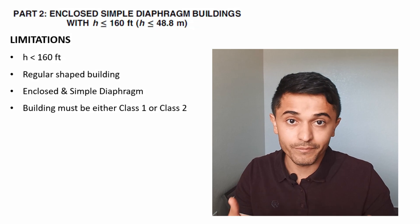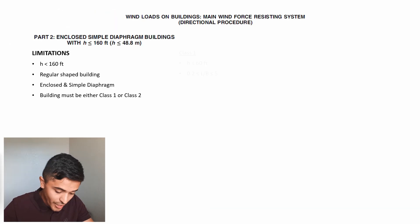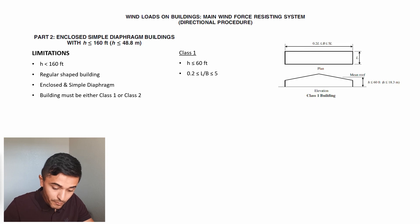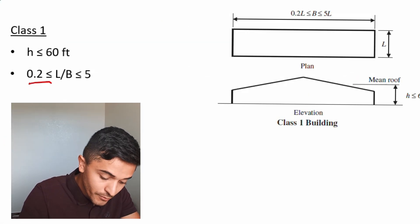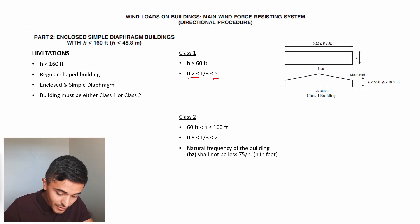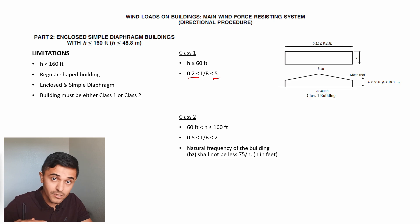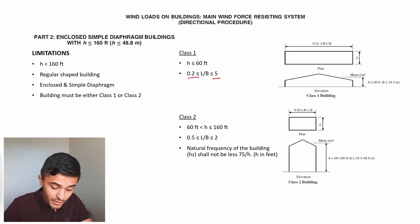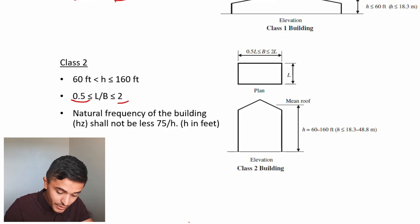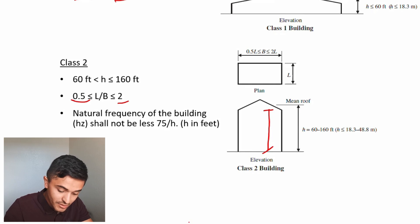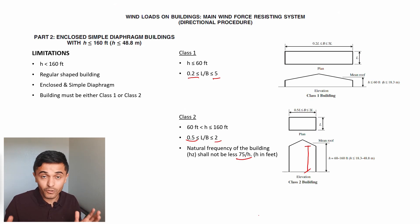The building must also be either class 1 or class 2 — another definition introduced in this chapter. For a class 1 building, the height is up to 60 feet and the ratio of length over width needs to be between 0.2 and 5. For class 2 buildings, the height ranges from 60 to 160 feet. The building can be taller, but the aspect ratio is more limited — between 0.5 and 2. Because the class 2 building is taller, the natural frequency is also limited, meaning the building cannot be too flexible.